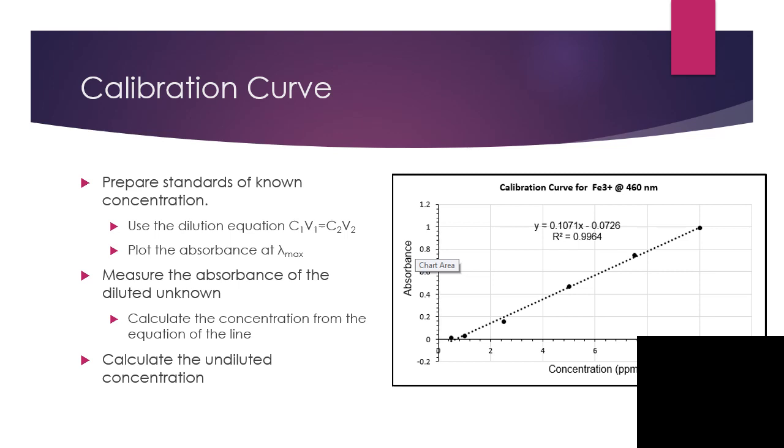So we want to pick the same metal nitrate, either copper, cobalt, or nickel. We're going to use the dilution equation in order to figure out what our new concentrations are, because we're going to make different concentrations so that we can see what the absorbance is of those different concentrations.